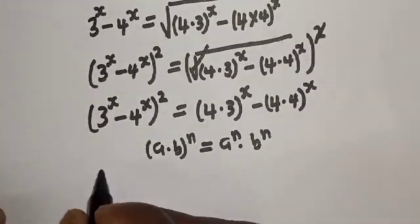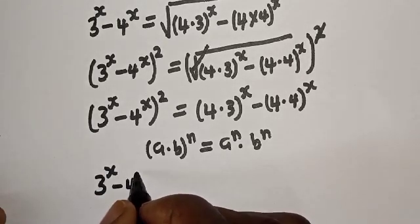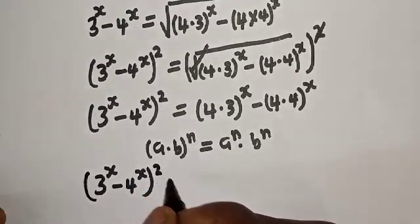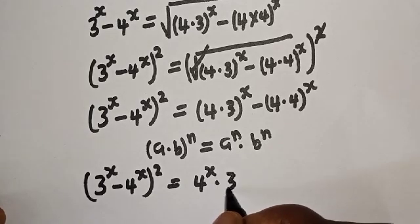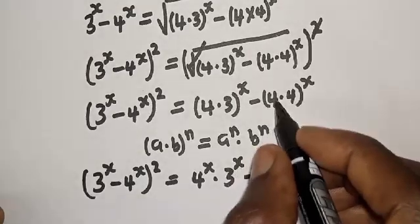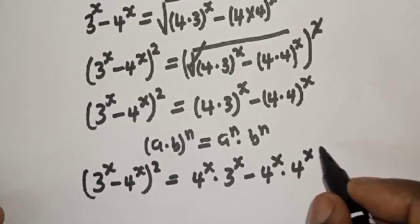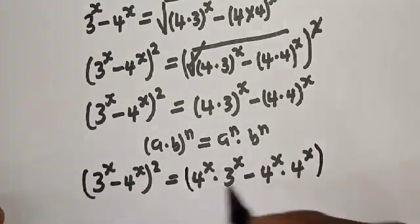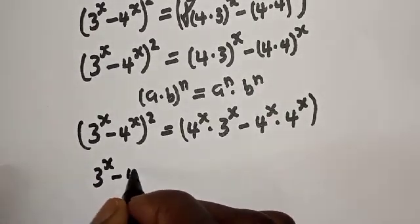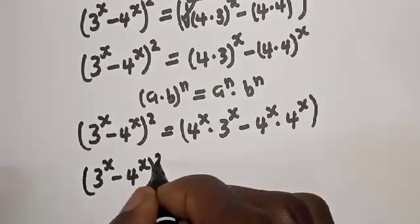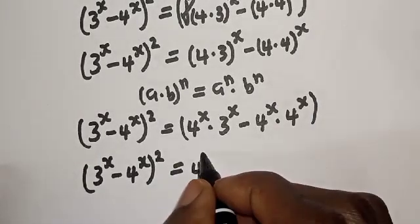So applying this rule, we have 3 raised to power s minus 4 raised to power s, squared, is equal to 4 raised to power s multiplied by 3 raised to power s, minus 4 raised to power s multiplied by 4 raised to power s. From here we can see that 4 raised to power s is common; let's bring it out: 4 raised to power s bracket 3 raised to power s minus 4 raised to power s.